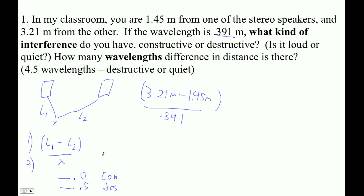Let's see. Parentheses 3.21 minus 1.45, right parenthesis, divided by 0.391. 4.5, so this is 4.501278. So that digit's pretty squarely a 5. The next one's a 0.